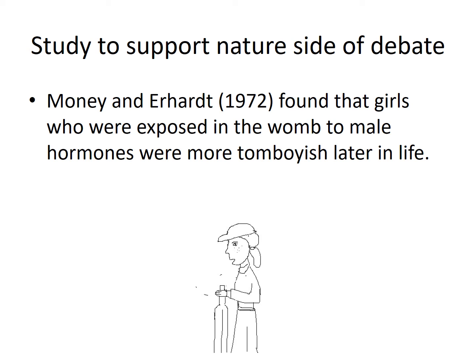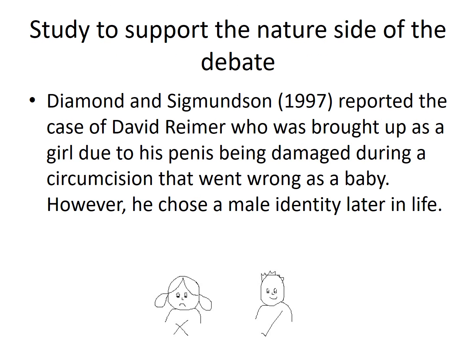There are studies to support both the nature and nurture side of the debate. On the nature side, Money and Earhart found that girls who were exposed in the womb to male hormones were more tomboyish later in life. Another study supporting the nature side is the Diamond and Sigmundsen case study of David Reimer. David Reimer was brought up as a girl due to his penis being damaged during a circumcision that went wrong when he was a baby. However, even though he was brought up as a girl, he decided that he had a more male identity.